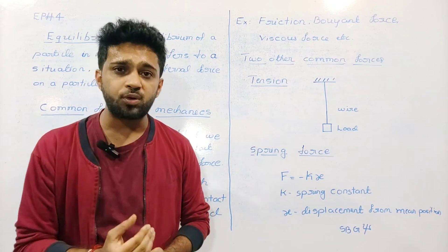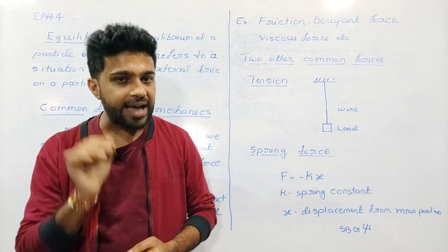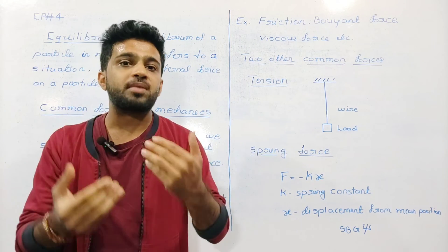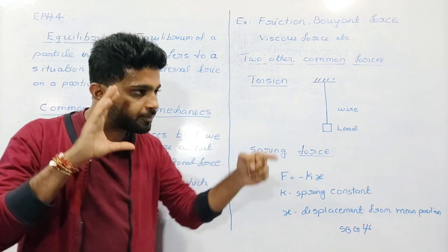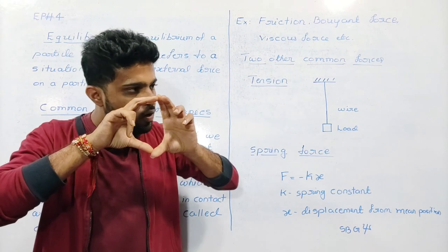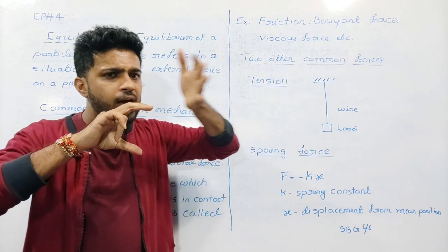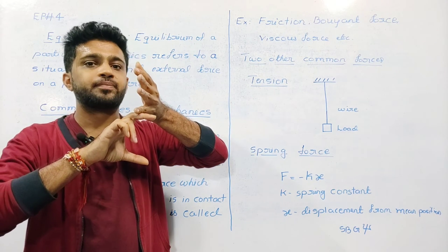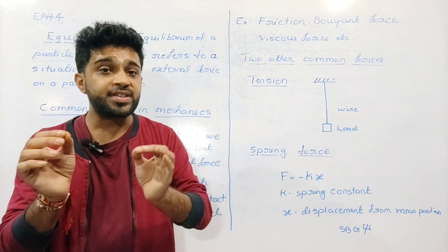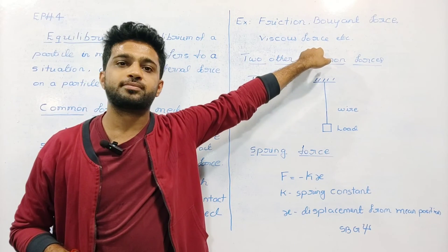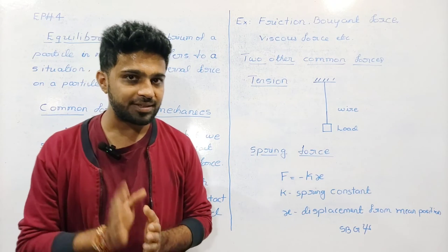Fluids are objects or substances which have the ability to flow. Examples of fluids include water, oil, liquids, and gases. The force which opposes the relative motion between fluids is called viscous force. For solids it is friction; for fluids it is viscous force.